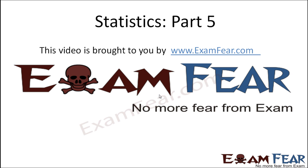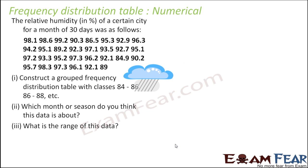Hello friends, this video on statistics part 5 is brought to you by examfear.com. The relative humidity in percentage of a certain city for a month of 30 days was given. We have 30 data points, so we have to create a grouped frequency distribution table again.